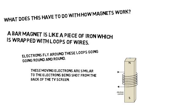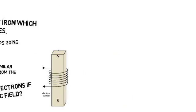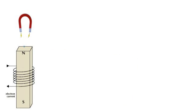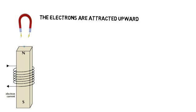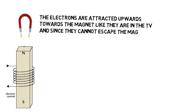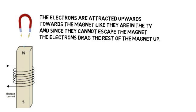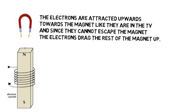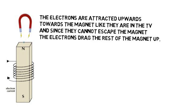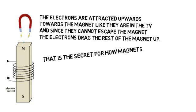So what do you suppose happens to these electrons if you put them in a magnetic field? The electrons are attracted upward toward the magnet like they are in the TV. And since they cannot escape the magnet, the electrons drag the rest of the magnet up. So first the electron current heads up, then it drags the rest of the magnet with it. That is the secret for how magnets really work.